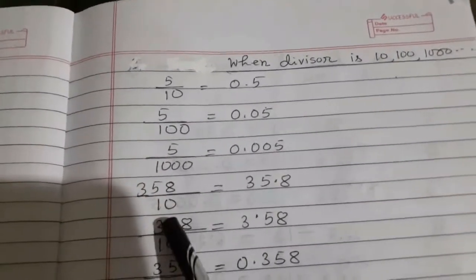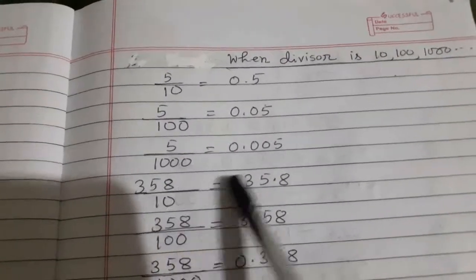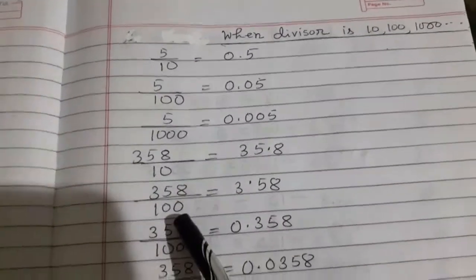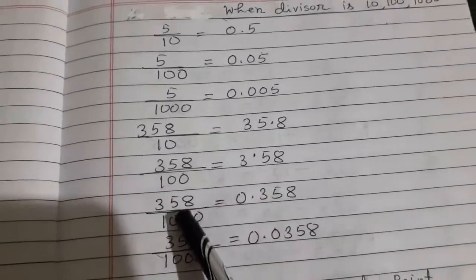Here 358 divided by 10. One zero, therefore put the point before one digit. Here also similar, same.